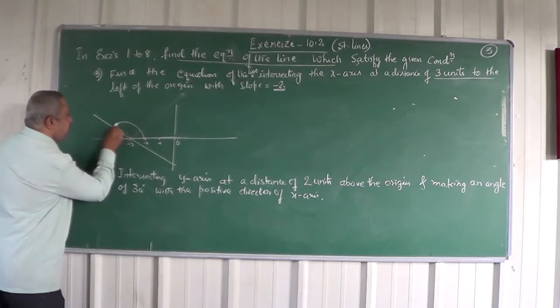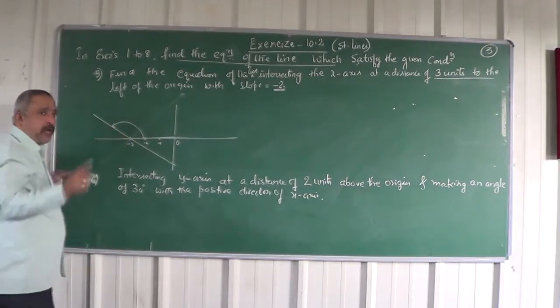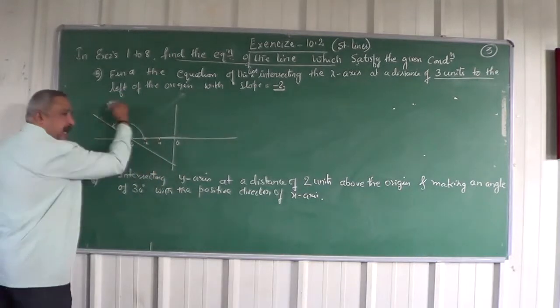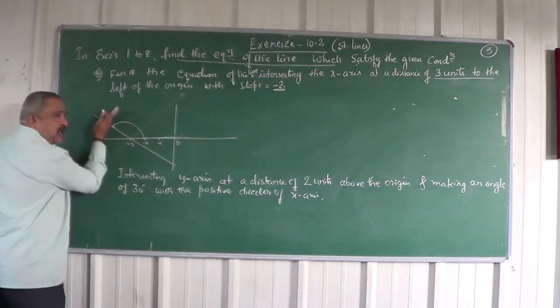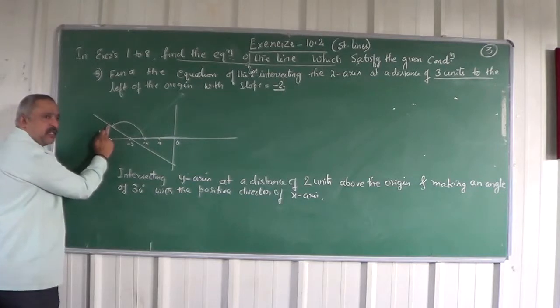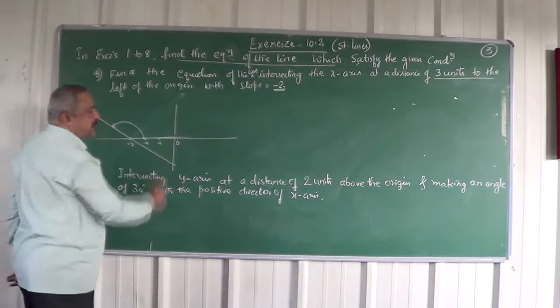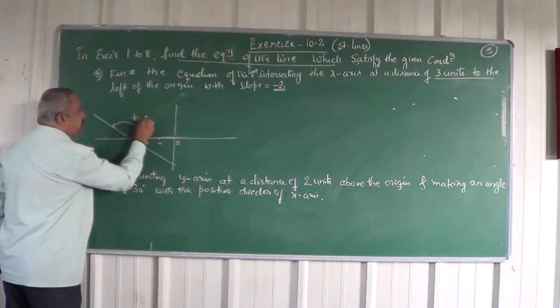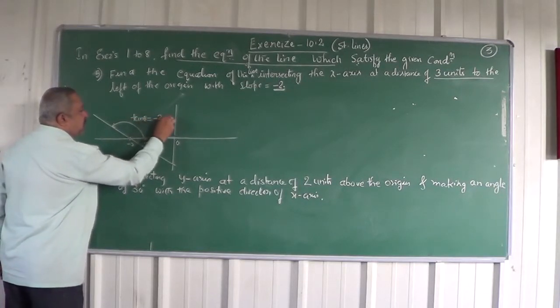Now see, this angle is greater than 90 degrees. You always have to take the angle in anti-clockwise direction. This is anti-clockwise direction angle, this is clockwise direction angle. See, if I take this angle, this is less than 90. Since tan theta is negative, this is tan theta which is equal to minus 2, that is slope.